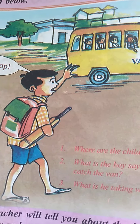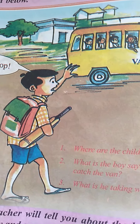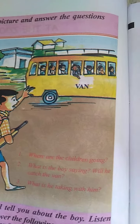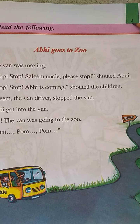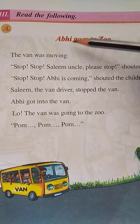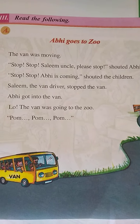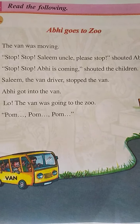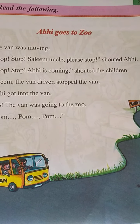Today we are going to see whether Abhi can catch the van and go to the picnic. Let's first take out your English textbooks and turn to page number three. The lesson name is 'Abhi Goes to Zoo.' So Abhi is also going to the zoo.